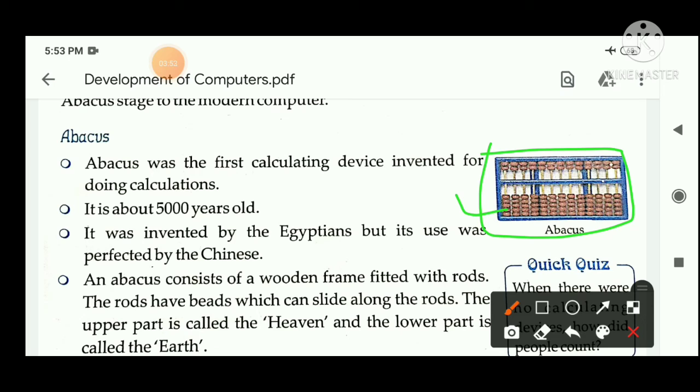Abacus एक wooden frame का बना होता है जिसमें rods लगे होते हैं, और इन rods पर beads लगे होते हैं और इन beads को हम ऊपर नीचे slide कर सकते हैं. इस abacus के upper part को हम कहते हैं Heaven, और जो इसका lower part है उसको हम कहते हैं Earth.